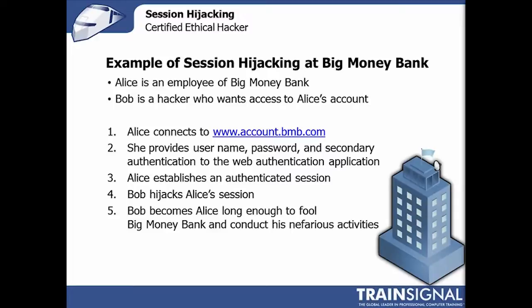Essentially, Alice connects to account.bmb.com using her browser, authenticates with a login name, password, possibly a smart card credential, a secure ID, or a one-time pad token. She goes through all this and convinces the server that she is Alice. But if Bob can swoop in and become Alice — even for just a moment — Bob can do whatever he wants without having to re-authenticate.